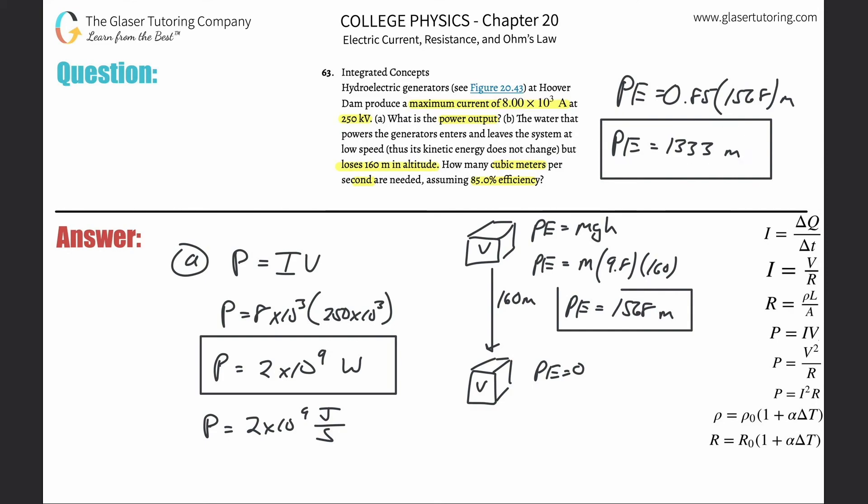Now I realize that power has the unit of joule per second. Instead of calling it power, I can just call it energy per time. Whatever this energy is being supplied by the potential energy drop of the water is going to be the energy that is utilized here to create that amount of power from the generator.